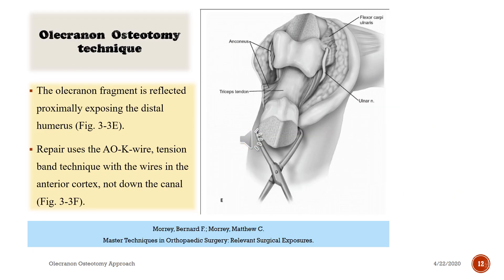After the osteotomy, the olecranon fragment is reflected proximally, exposing the entire distal humerus. Look at the picture showing how the entire distal humerus is exposed.